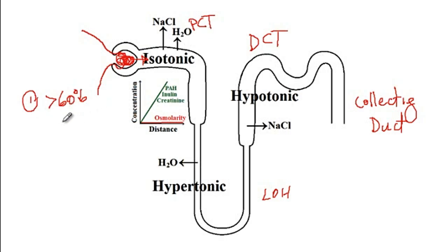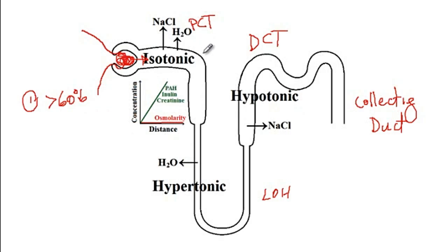For example, if you are asked that there is a drug that stimulates water reabsorption from the descending limb of the loop of Henle, which part would absorb water the most — the answer would still be the proximal convoluted tubule.